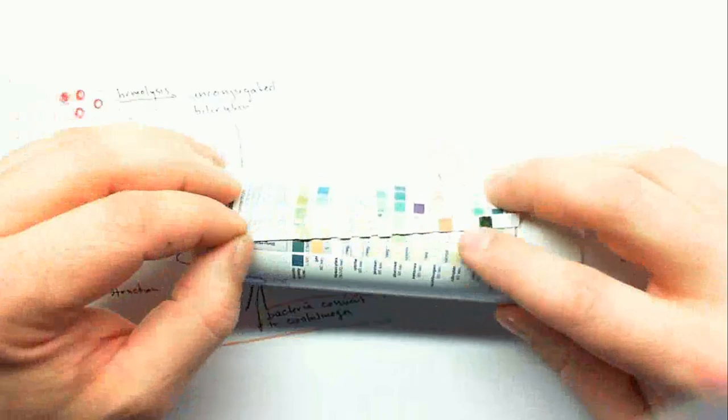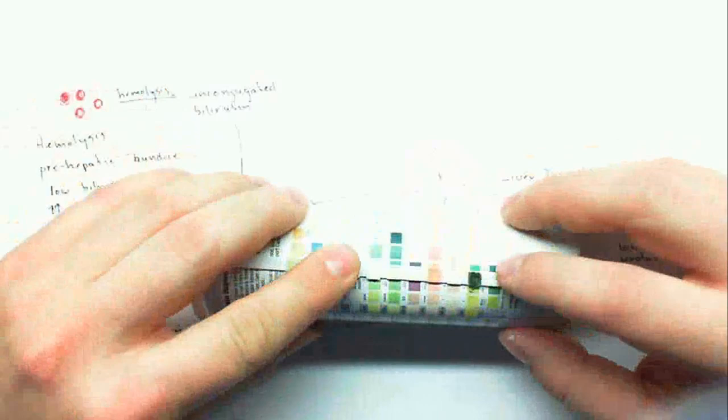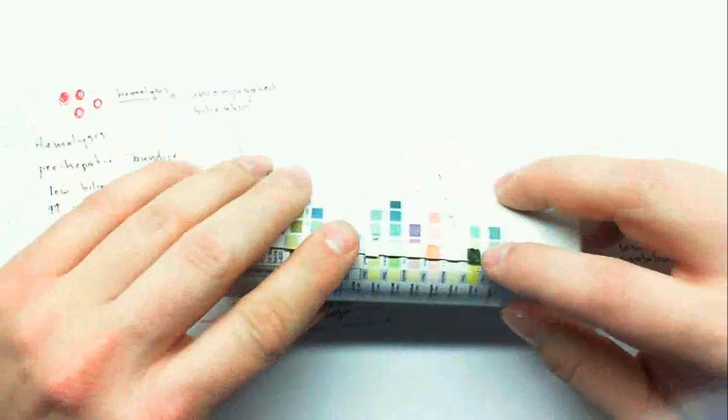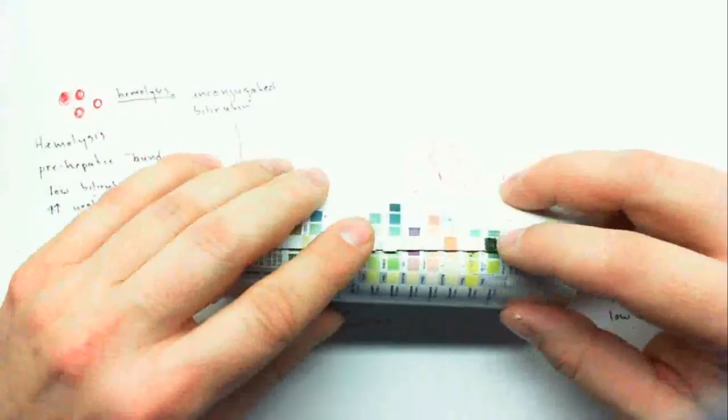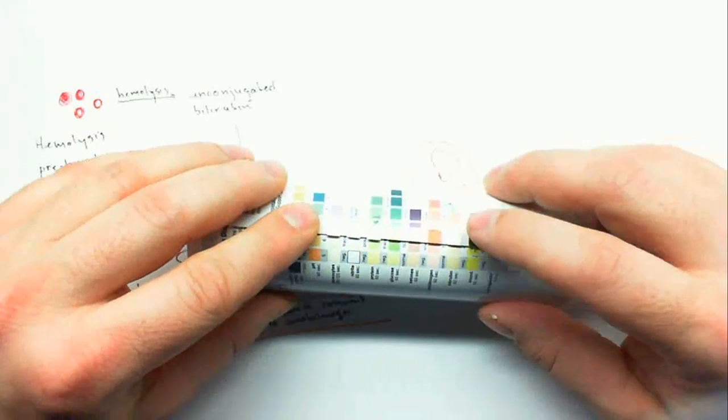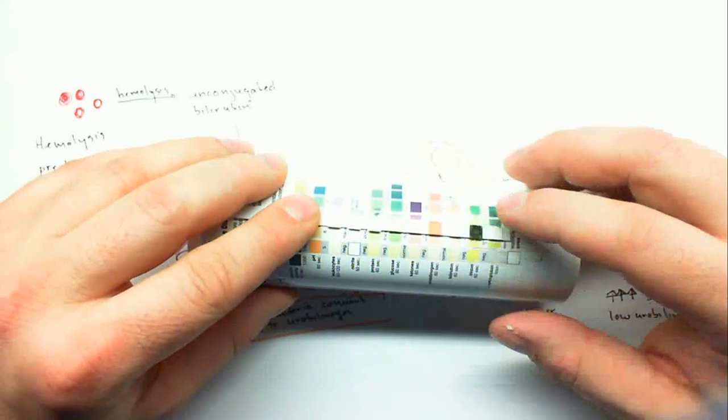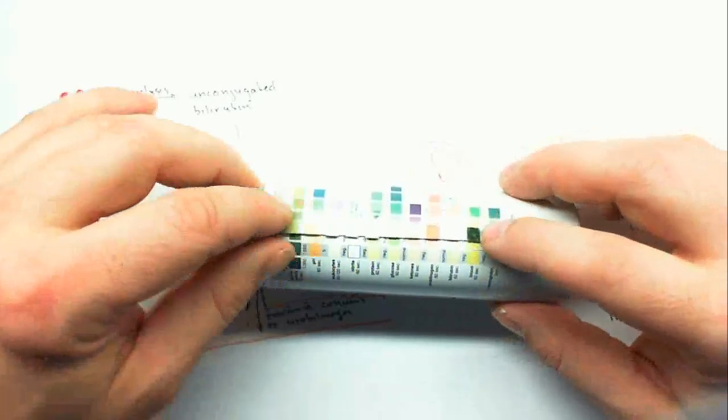In this stick, there's high urobilinogen and there's also hemoglobin. So high urobilinogen, there's also hemoglobin. There's not a punctate or spotted pattern, it's more of a uniform color. If there was also higher bilirubin, this could indicate liver disease, but since there's not an elevation in bilirubin, this suggests hemolysis, especially since there's hemoglobin in the urine.